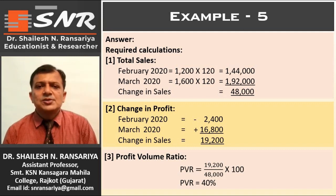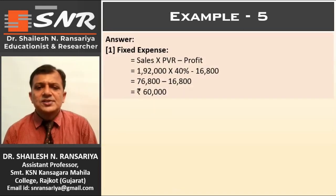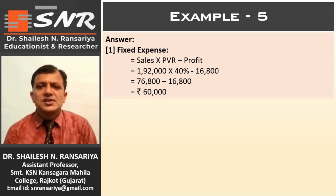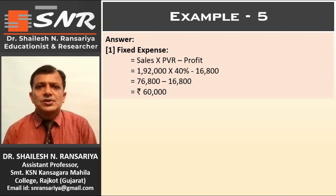Now we can give the answers one by one. First, fixed expenses. The formula is: Fixed Expenses = Sales × PVR − Profit. We have two months' sales available and we consider March. So: ₹1,92,000 × 40% − ₹16,800. The fixed expenses are ₹60,000.